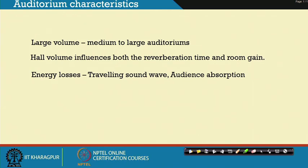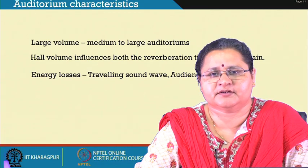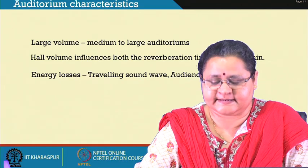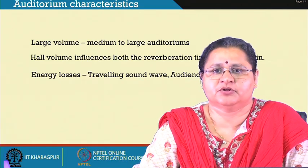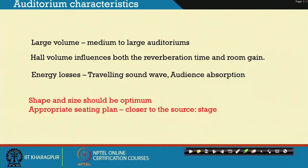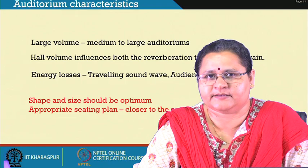Furthermore, the audience size — say 500, 700, 1000, 1200, 2200, 2700 — we have auditoriums of such scale. Audience as an absorptive member should always be accounted for. Shape and size should be optimum so that it fits the audience closest to the source, so that minimum energy loss happens and the room gain factor is also maximized.